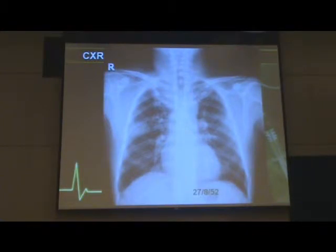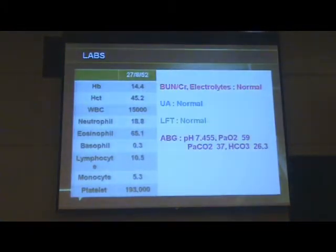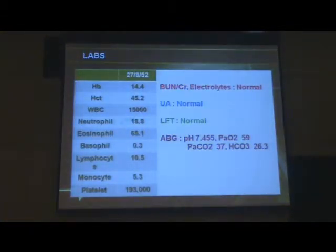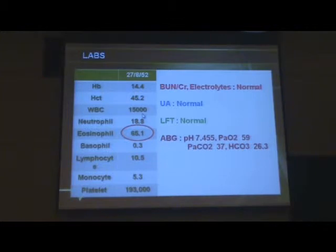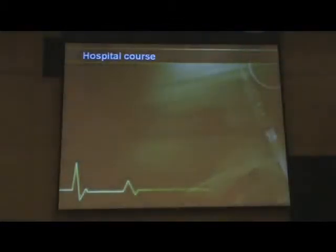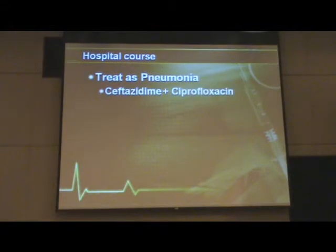There was some infiltration, as you can see, in the right upper to middle lung field. His labs also showed leukocytosis with marked eosinophilia. His other labs were pretty much unremarkable, besides the arterial blood gases, which showed moderate hypoxemia.